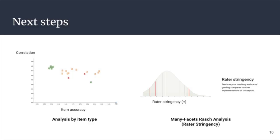There are a number of future directions for this work. Those directions include providing additional item level analysis to reports in LabFlow. In particular, I'm interested in applications of item response theory toward estimating properties of items like their difficulty, student proficiency, and rater differences. Here we can see some initial data visualization designs to convey quantitative properties of report data, like item type correlations with report score on the left, and rater stringency estimates against other implementations of a lab activity on the right.